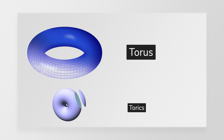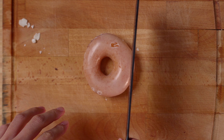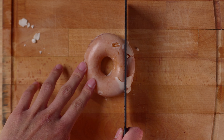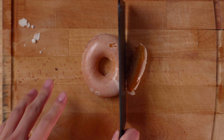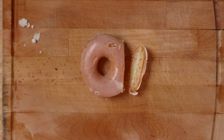Toruses are these ring-looking shapes. The closest analogy I can provide is, in this case, a Krispy Kreme original glazed — and you cut a section through it. Now you have a toric shape.